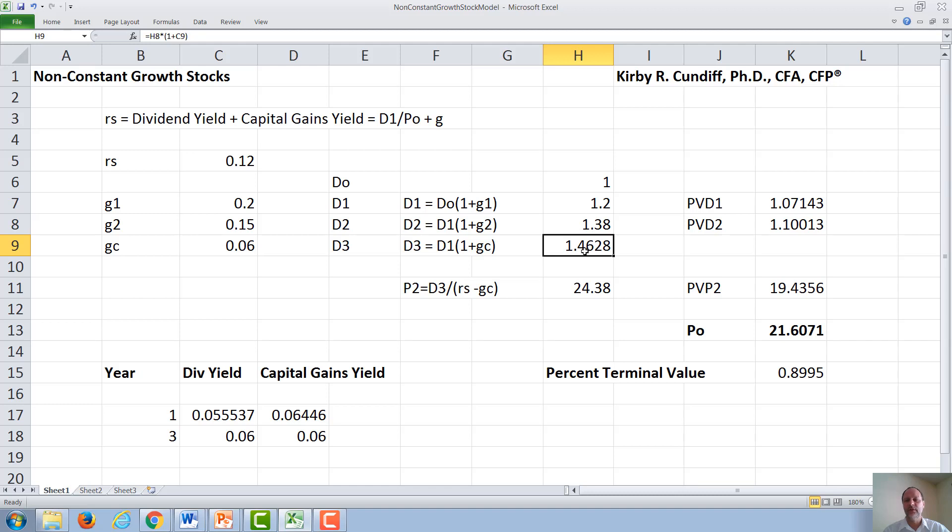We then need to know the present value of some of these dividends. The present value of the dividend D1 will be 1.2 divided by 1.12, which is our required rate of return, or 1.07. The present value of the dividend D2 is going to be 1.38 divided by 1.12 squared.